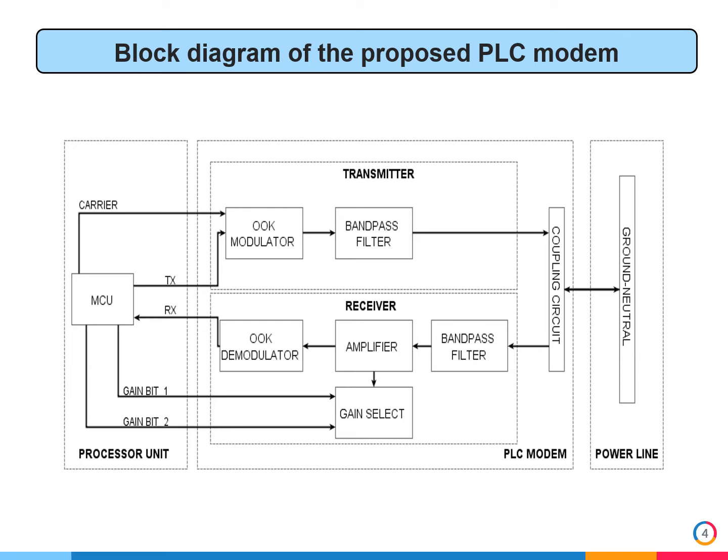The receiver also has a controllable amplifier that can automatically select the gain on the received signal, and it couples with the power line through ground and neutral wires, which makes the system even simpler since it does not require complex isolation circuitry. The modem connects to the microcontroller that is part of the IoT device through UART communication.